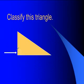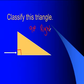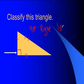Let's classify this triangle. It has a 90-degree angle, so that means it's a right triangle. Looking at its sides, it looks like two sides are the same and one side is different, so this is a right isosceles triangle.